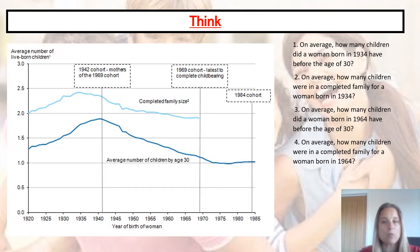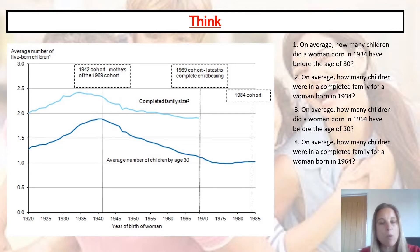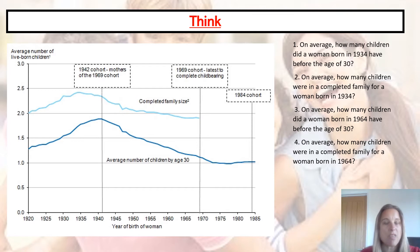Number two: on average, how many children were in a completed family for a woman born in 1934? Going up to the light blue line, we're just nearly at 2.5, so around about 2.4. Then for women born in 1964, how many children did they have before the age of 30? Much lower — more like 1.2. And on average, how many were in a completed family for that same woman? We're looking just under the 2 line, at about 1.9.